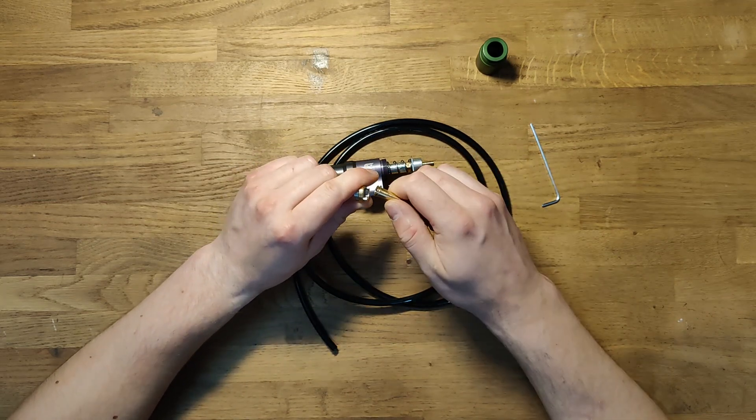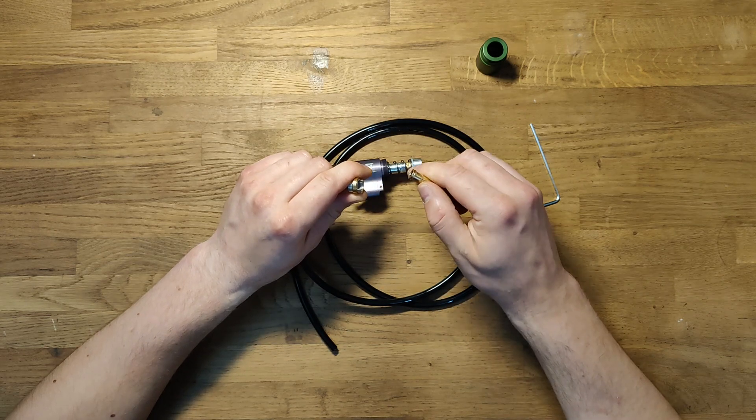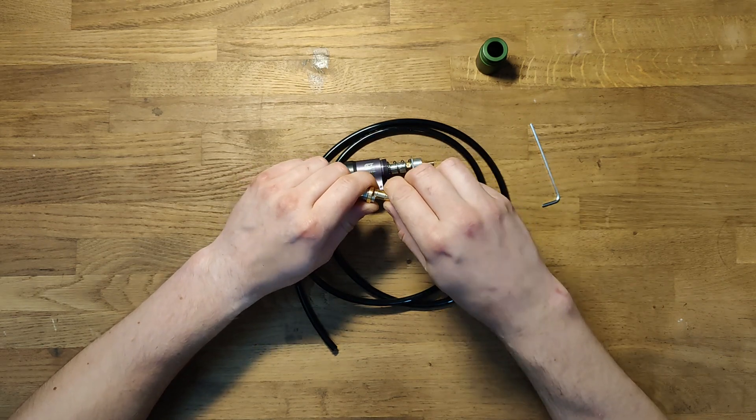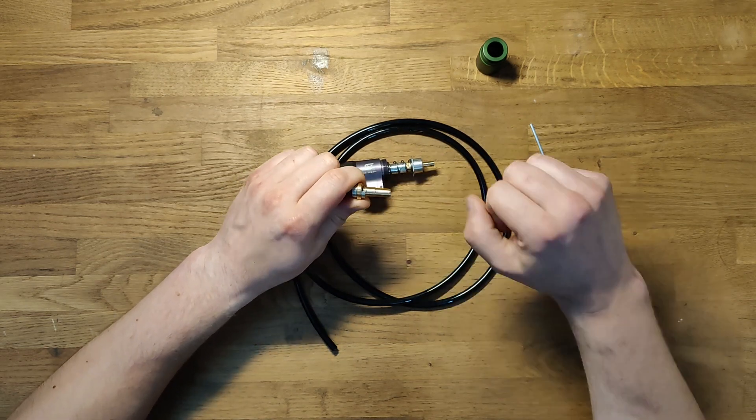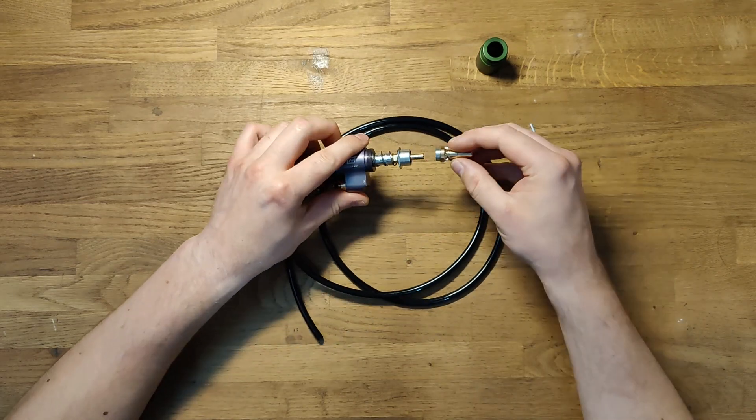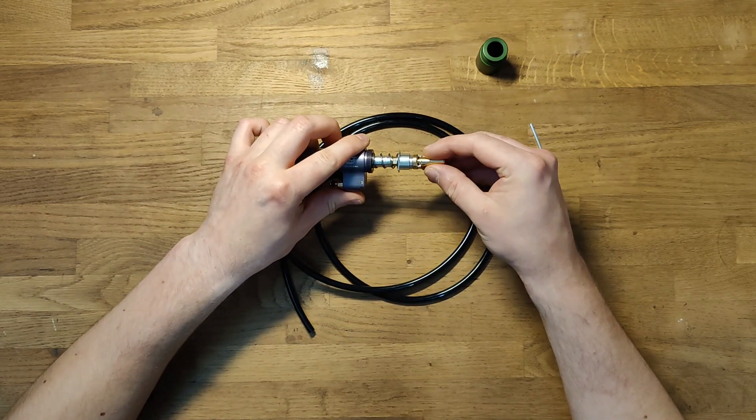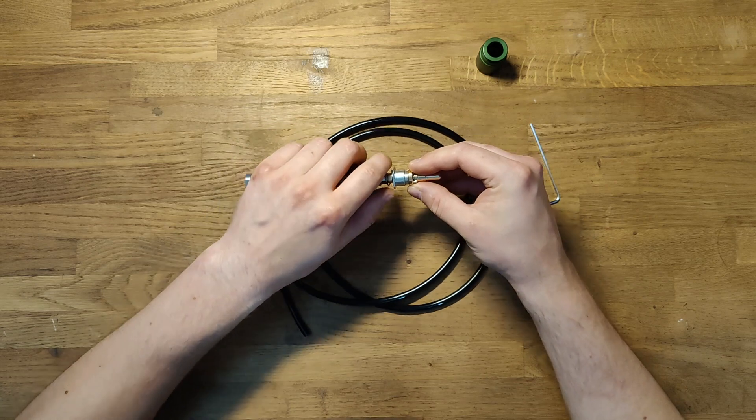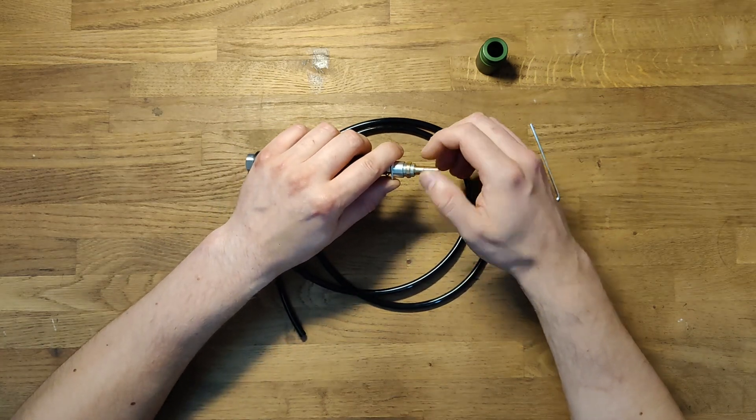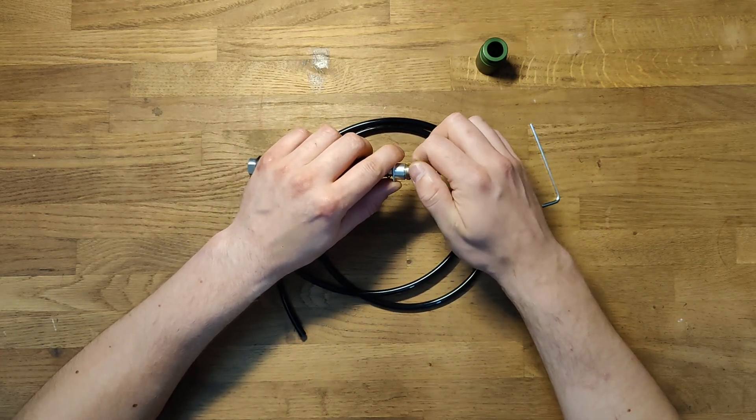Now you can put back in the nozzle of your choice. Simply push it back in. Put it over the brass tube. When the threads are touching each other screw it in to the length of your selection.